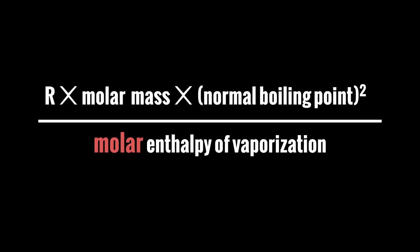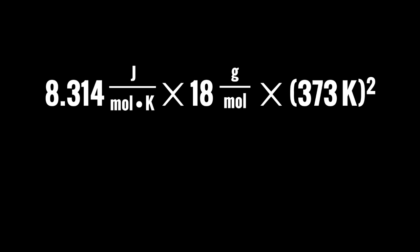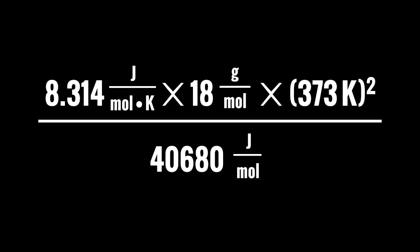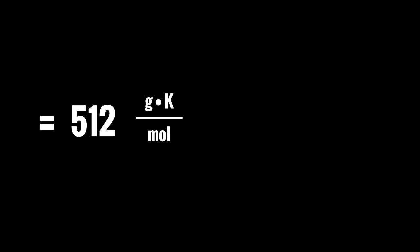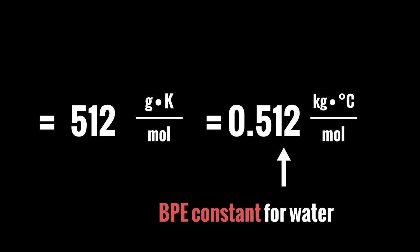For example, for water — the universal solvent — if we use this formula to calculate the BPE constant, we start with R, which is 8.314 joules per mole Kelvin. We multiply that by 18 grams per mole, which is the molar mass of water. We multiply that by the square of the normal boiling point of water, which is 373 Kelvin. We divide all of that by 40,680 joules per mole, which is the molar enthalpy of vaporization for water. When you evaluate this expression, that equals 512 grams Kelvin per mole, which equals 0.512 kilograms degrees Celsius per mole. You should memorize that — 0.512 kilograms degrees Celsius per mole is the BPE constant for water.